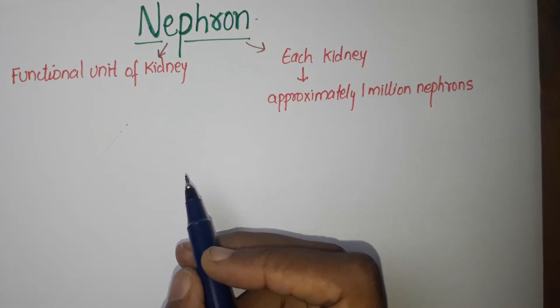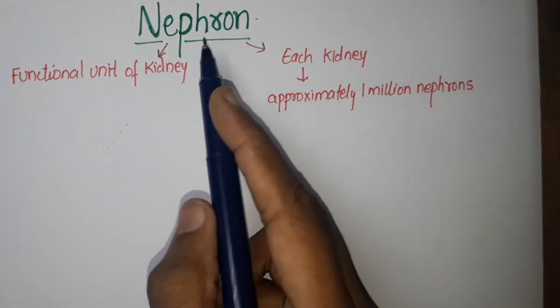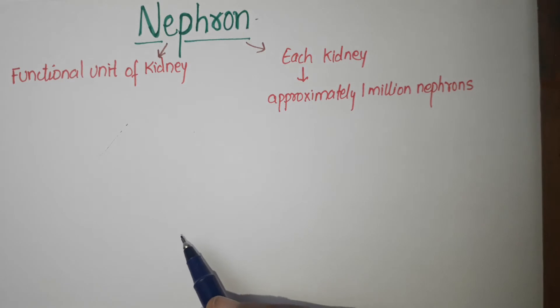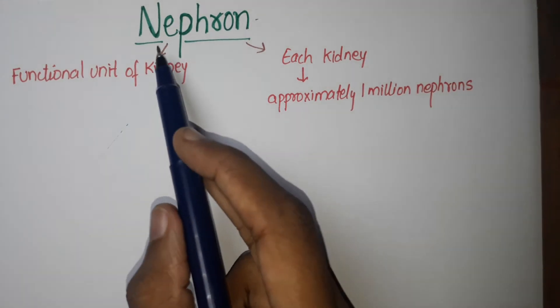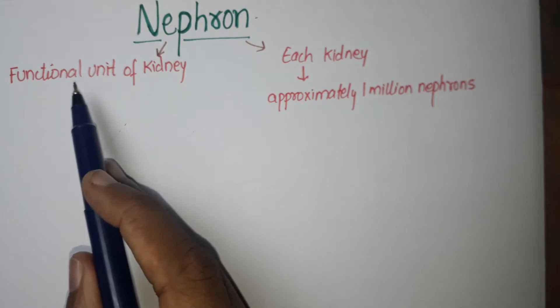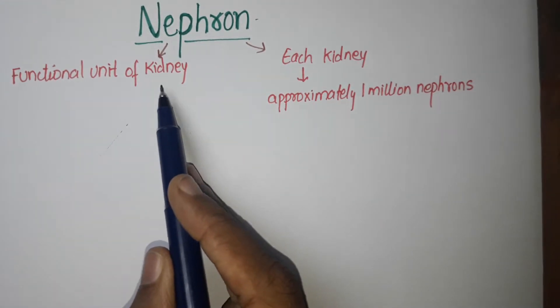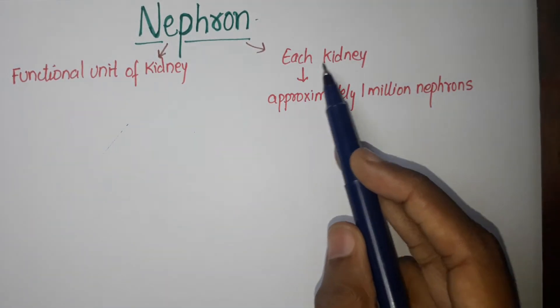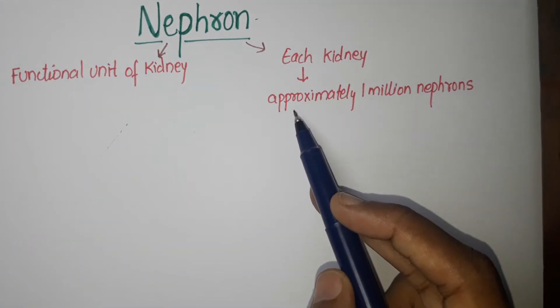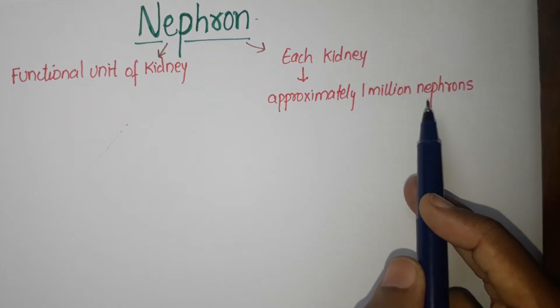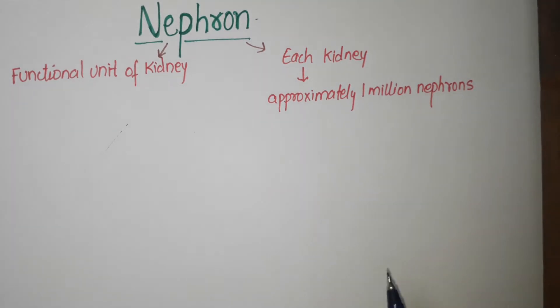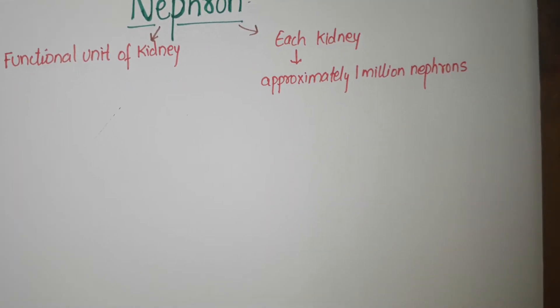Hello everyone, today I will show you the structure of nephron. Nephron is the functional unit of kidney, and each kidney is composed of approximately 1 million nephrons. I will show you how to draw the structure of nephron in a very easy way, so I'm drawing now.